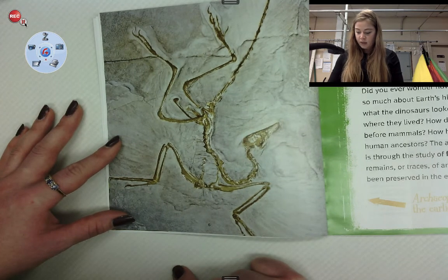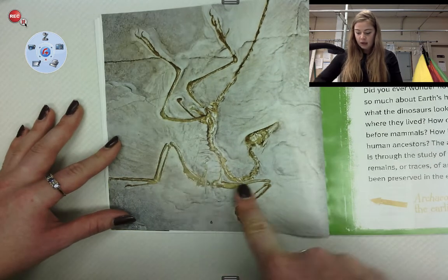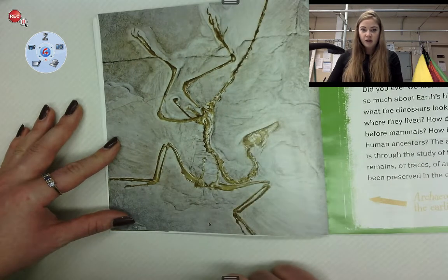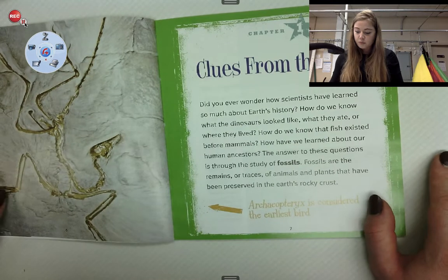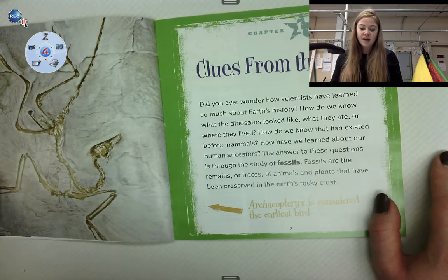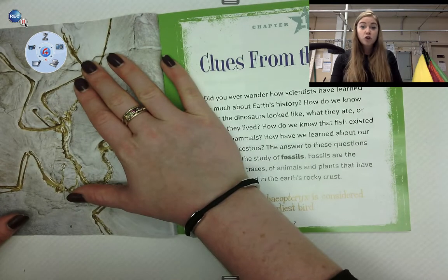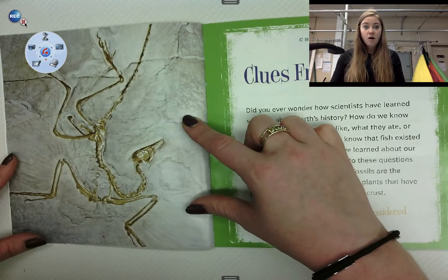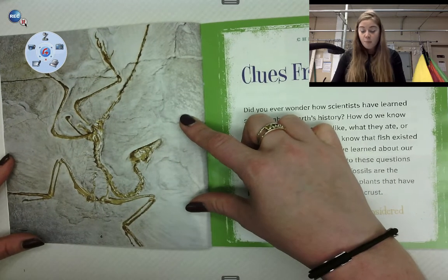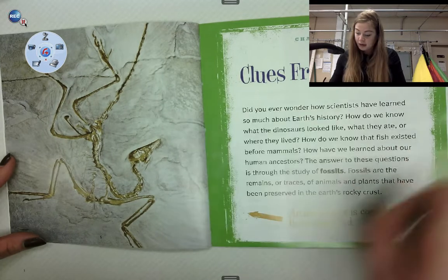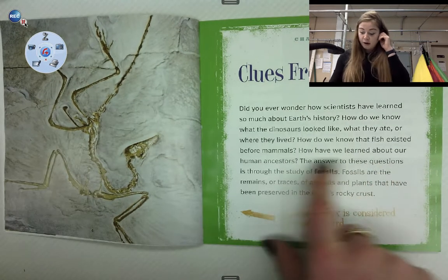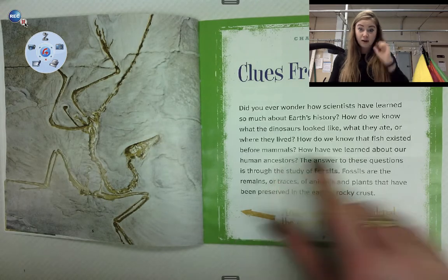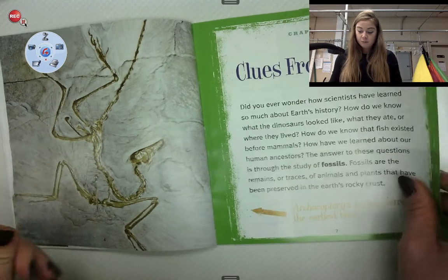I'm also noticing that when this bird died, it looks like it got crushed — look at the way its neck is right now. So we're going to be thinking about how these fossils give us clues to finding out about what life was like millions of years ago, before humans. Remember, it said: how have we learned about our human ancestors? Which means humans were not always on planet Earth. Let's keep going.